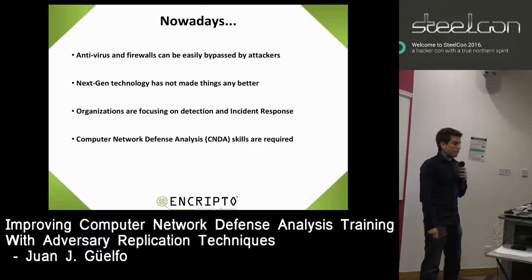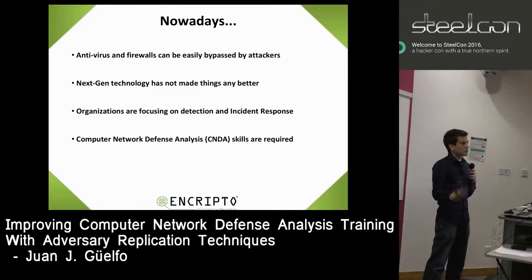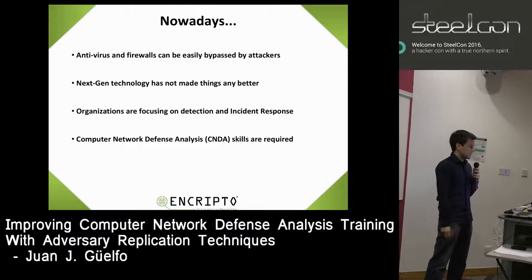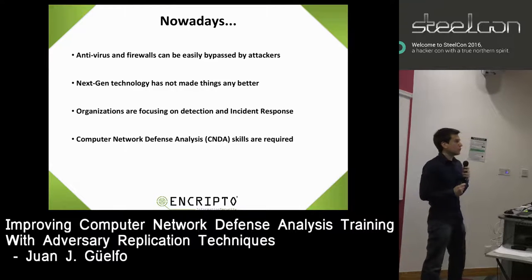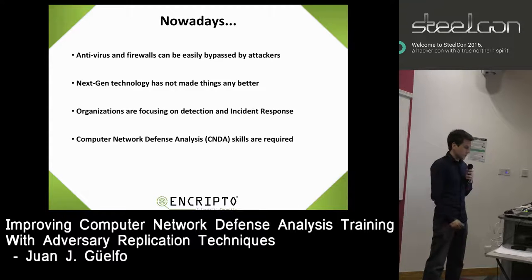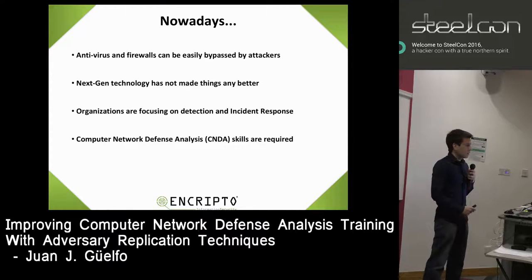It's old news that AV and firewalls can be bypassed by attackers, and even though we have had improvements with next-generation firewalls and next-gen AV, the truth is that the technology is not making things any better. Companies are understanding that it's not possible to keep attackers from coming in, so little by little they are focusing more on detection and incident response. If you are on a blue team and an incident happens, sooner or later you will need computer network defense analysis — CNDA.